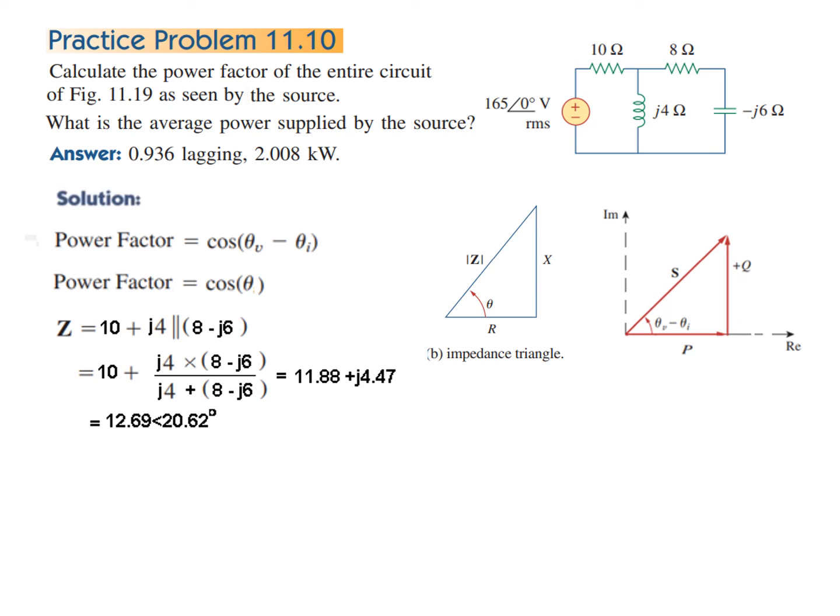So it is added with 10. Solving this, the answer will be 11.88 + j4.47, and in polar form we'll get this answer: 12.69∠20.62°.